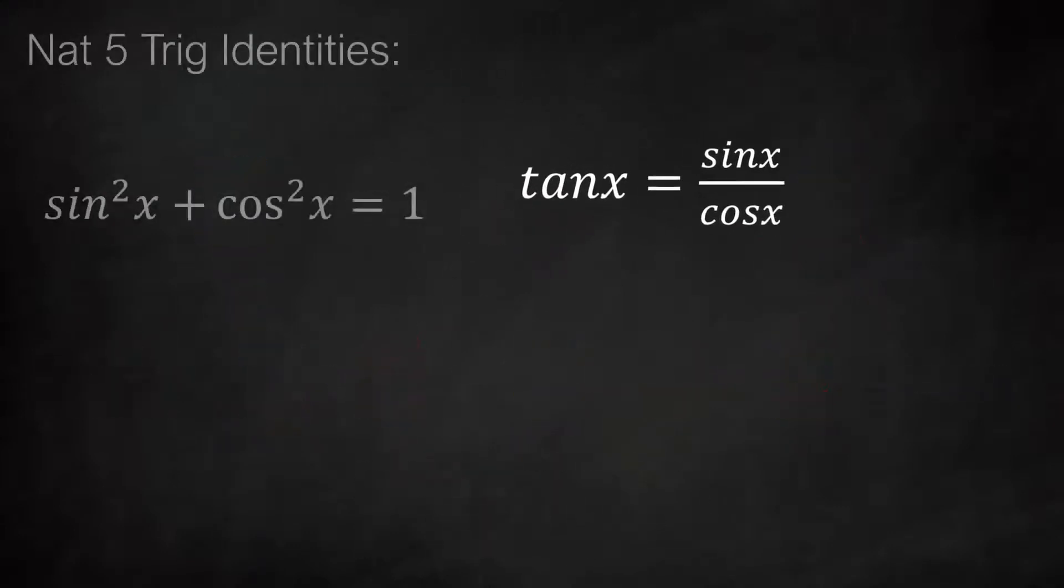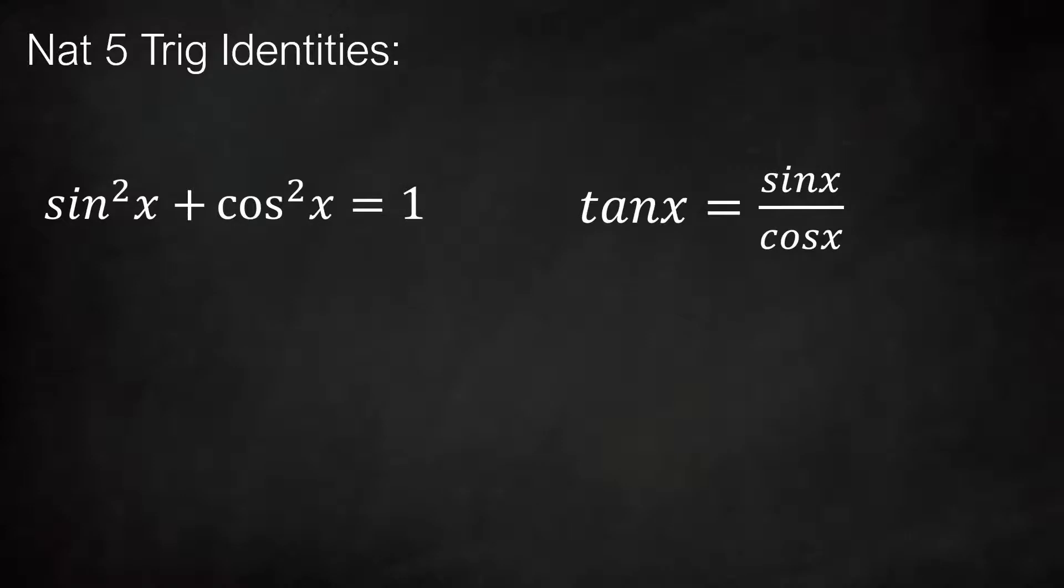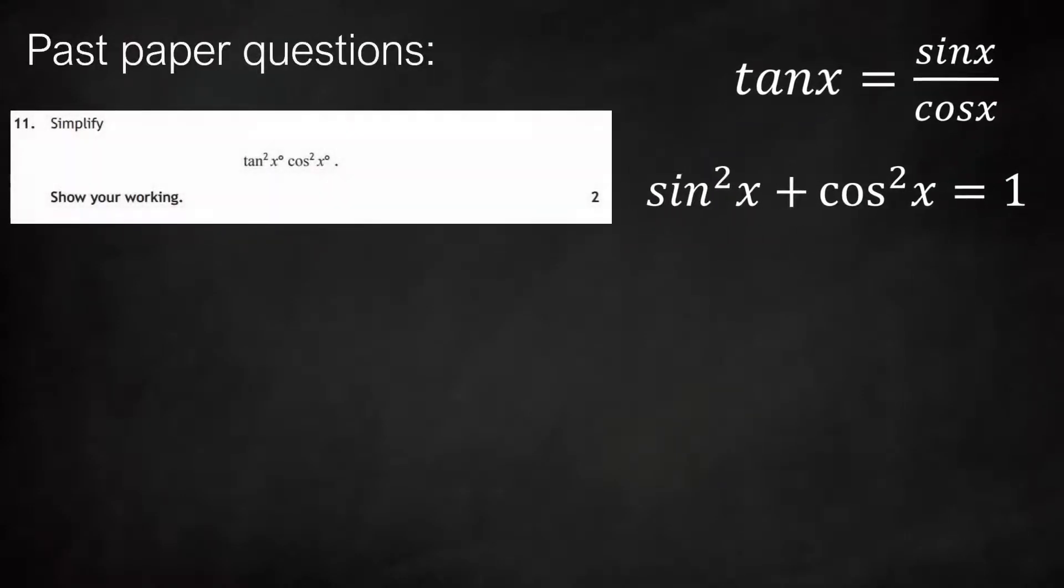So that's a proof of each of the two identities. Now let's use them in some examples. Let's move the equations to the side and get started. Let's have a look at some past paper questions that involve trig identities. You'll notice that all of these are only worth two marks.